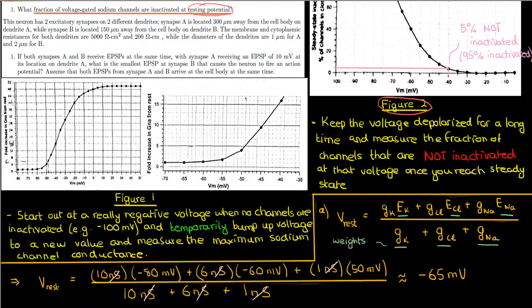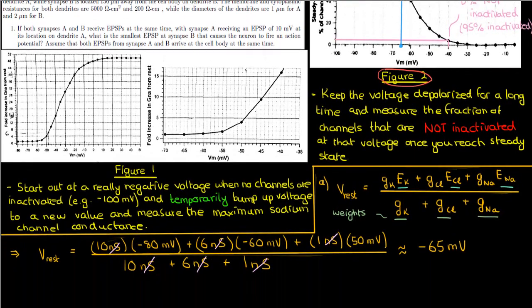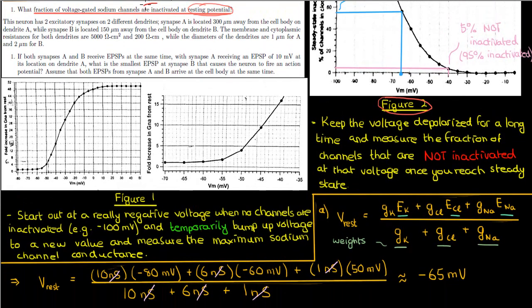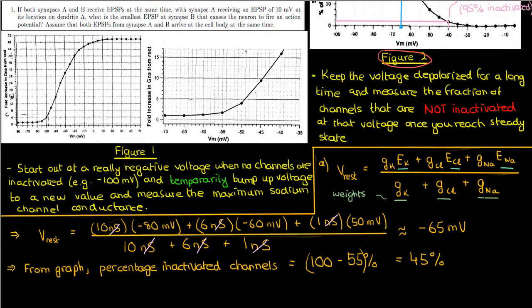At a resting potential of negative 65 millivolts, we're at steady state since resting potentials persist as long as the cell is at rest. Going to figure 2, at negative 65 millivolts, 55% of channels are not inactivated. Since the question asks for the percentage that are inactivated, we do 100 minus 55, giving 45%. So at the resting potential of negative 65 millivolts, 45% of channels are inactivated.